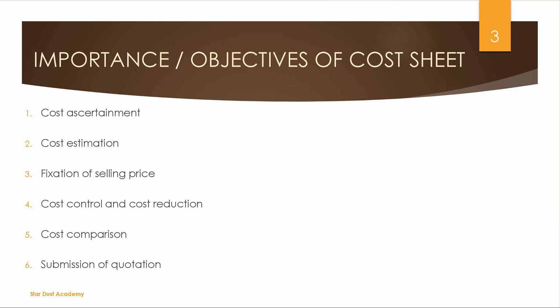Next is Cost Control and Cost Reduction. If there is a waste stage, you will eliminate that. Cost reduction is permanently achieved by controlling the production process.